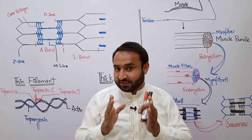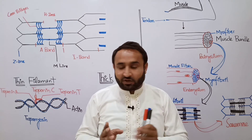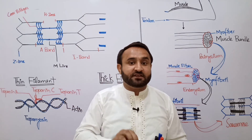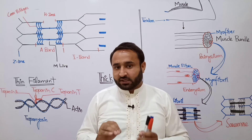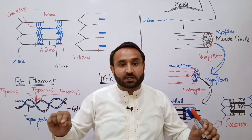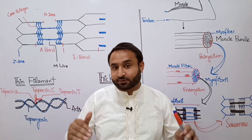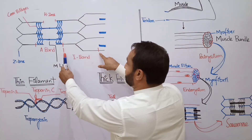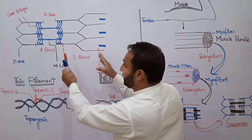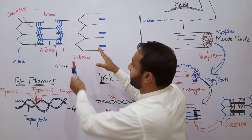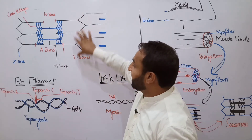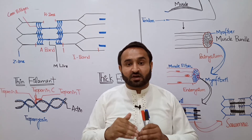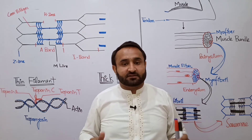In the ultrastructure, there are bands or stripes. The A-band is a thick, dark band. 'A' stands for anisotropic — anything which can polarize visible light is called anisotropic, meaning it can distribute sunlight into seven different colors. The I-band is the area of the myofibril where only the thin filament (actin) is present and no myosin filament is present. 'I' stands for isotropic — anything which cannot polarize visible light.